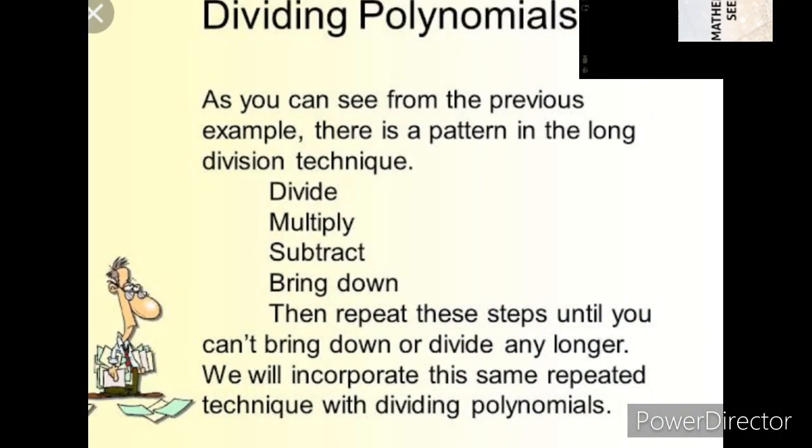Next is your dividing polynomials process. First is divide, multiply, subtract, then you have to bring down. Then repeat the same steps until you can't bring down or divide any longer. It's same like our whole numbers and natural number division students. When it's coming to polynomial, we have variables. Just think.